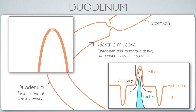Zooming in on a villus, we consider a couple of cell types. First, absorptive cells play a role in chemical digestion and transport of nutrients into the bloodstream. They feature their own finger-like projections called microvilli, and their apical surfaces are often referred to as the brush border. Digestive enzymes are anchored to that apical membrane and therefore aren't swept through the small intestine like other enzymes.